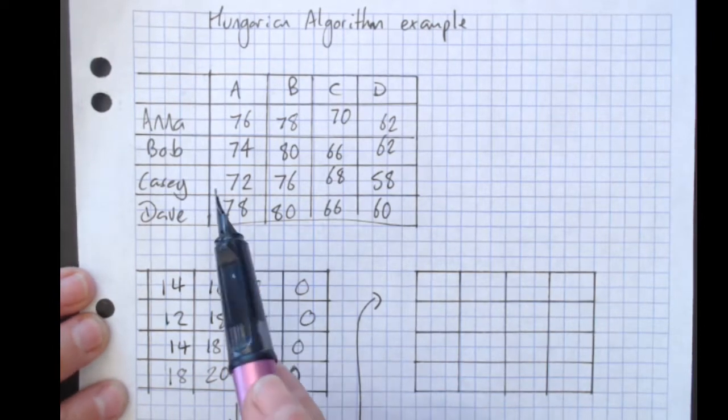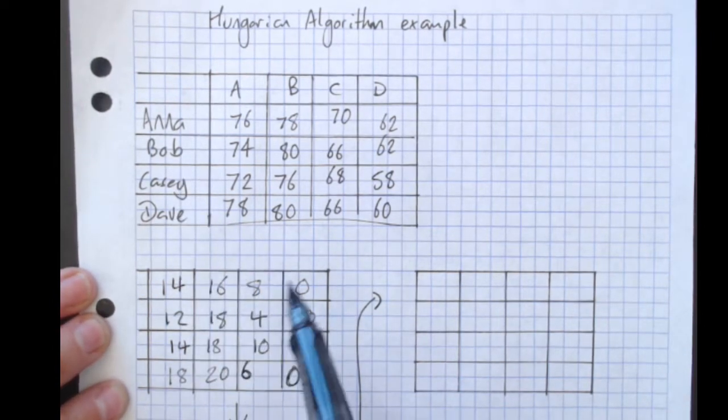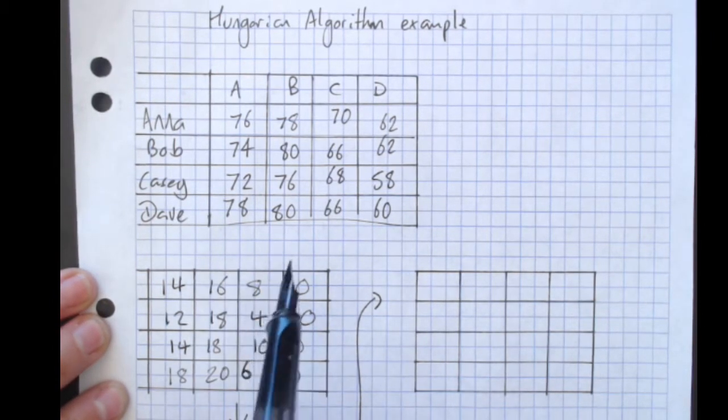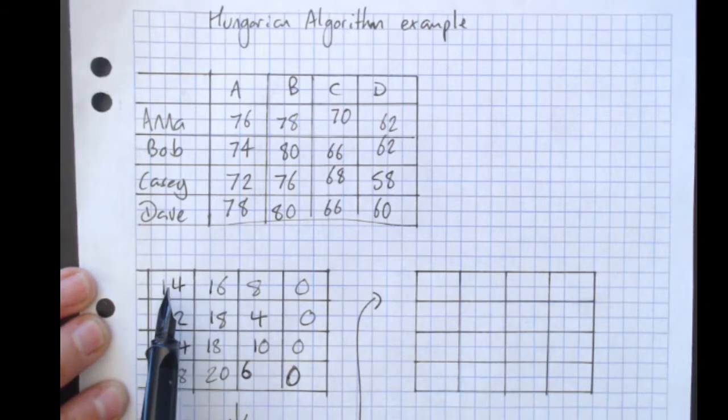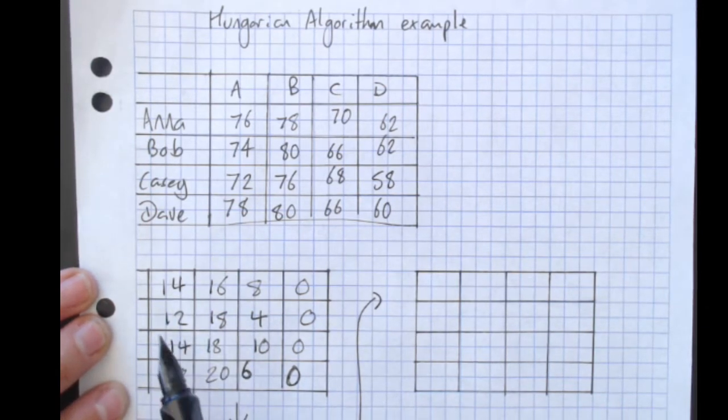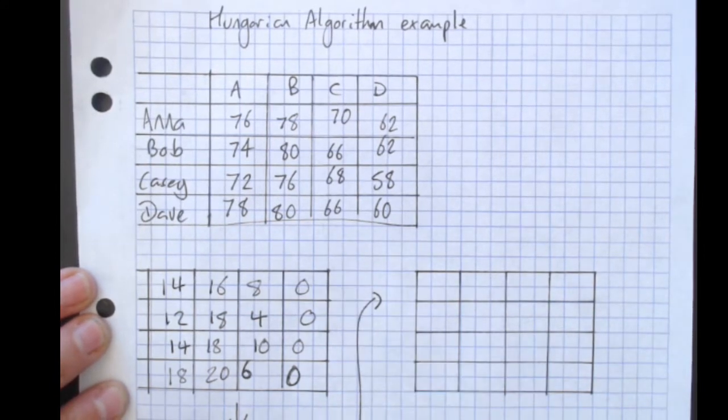Double check. We want, because there's four rows, we want a minimum of four lines to cover every zero. Now that doesn't mean a maximum. Sure, I could do one, two, three, four. No, I have to cover all the zeros in the minimum. So that would be one. When the minimum row or lines I need is four, then I know I'm done.